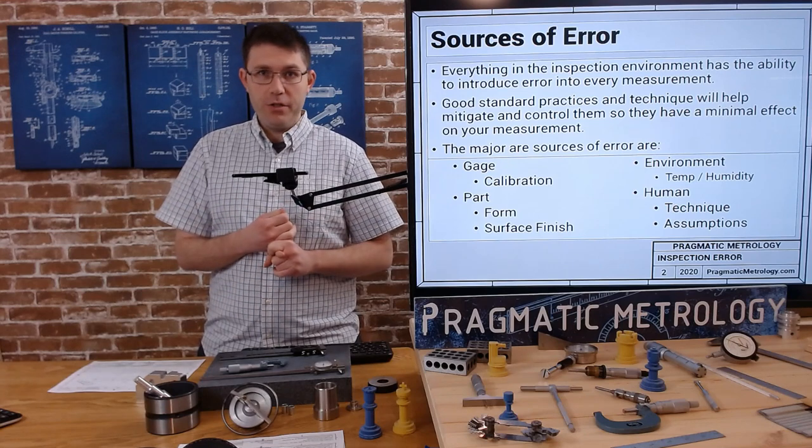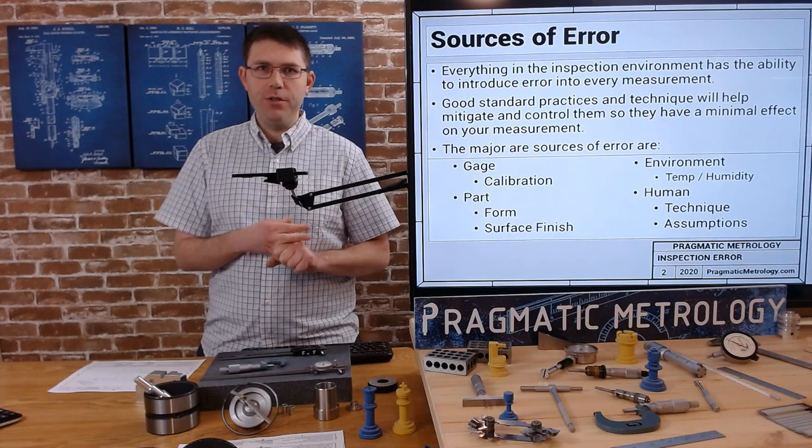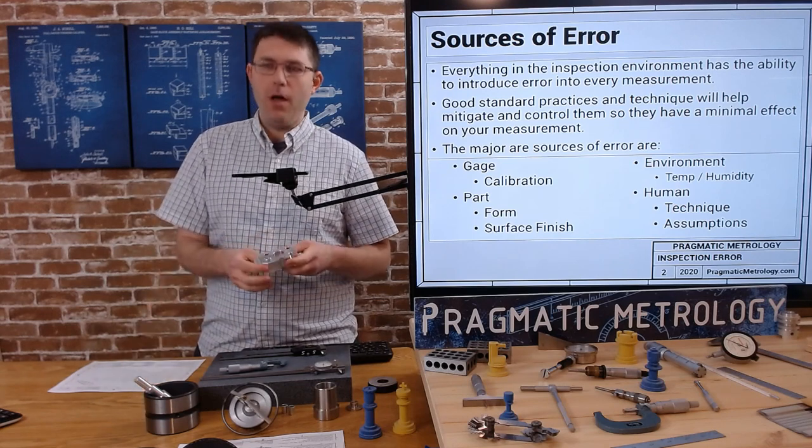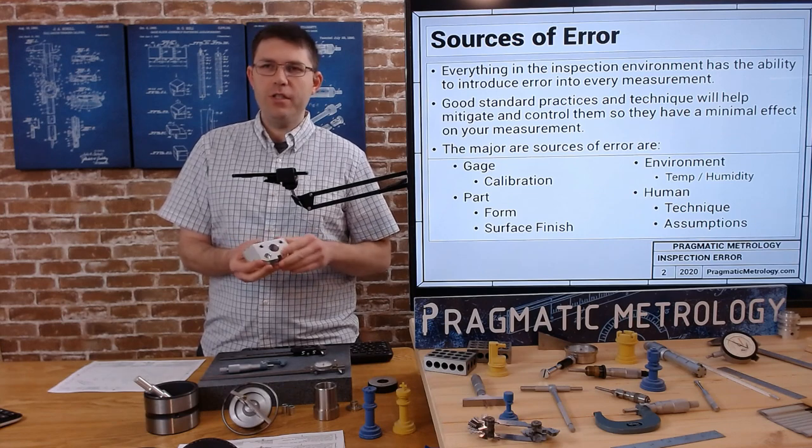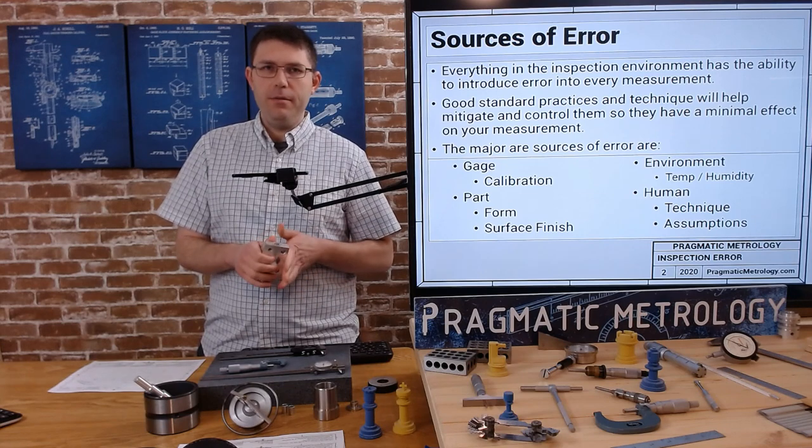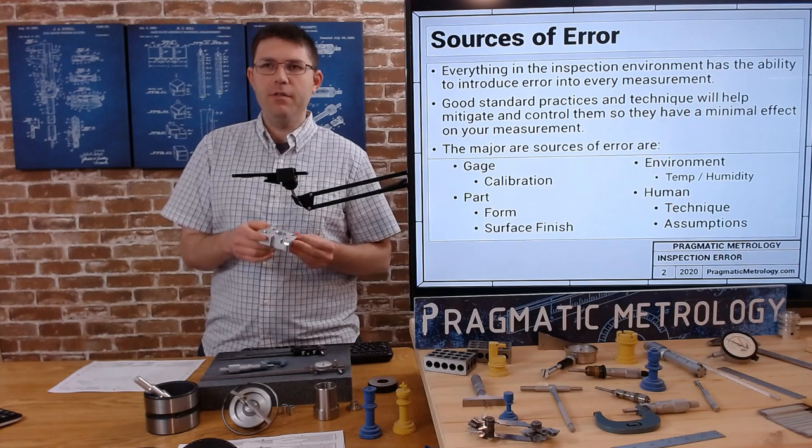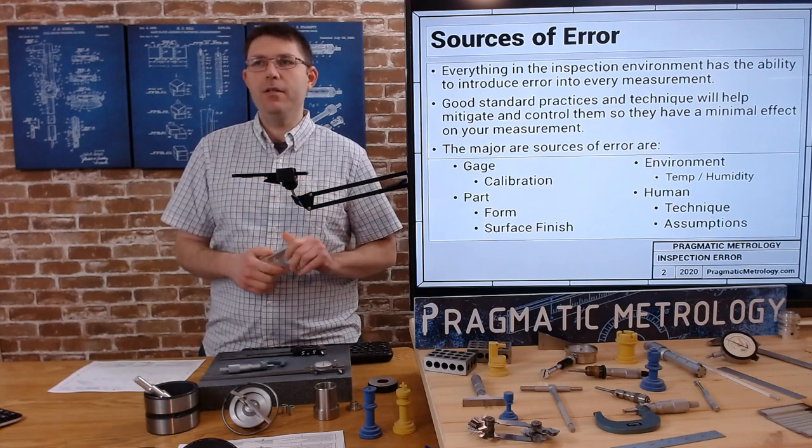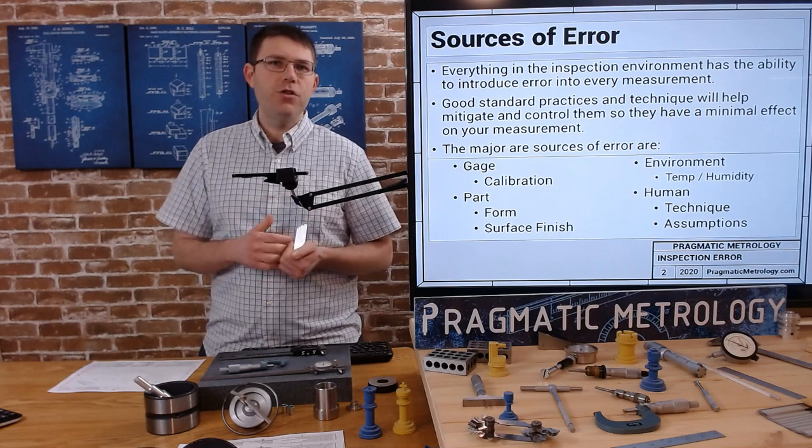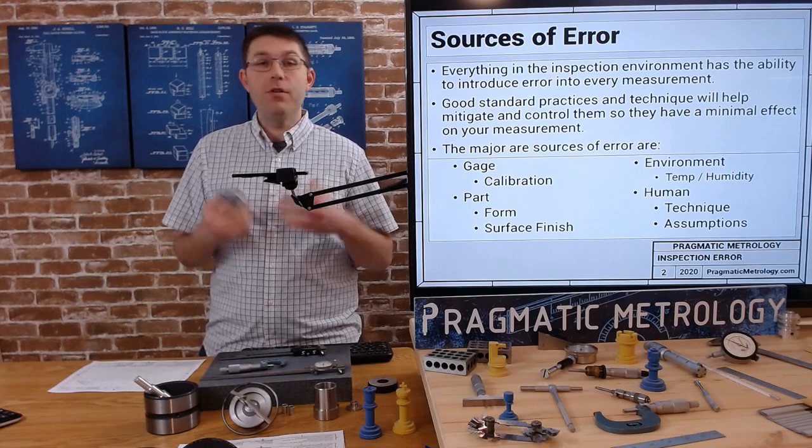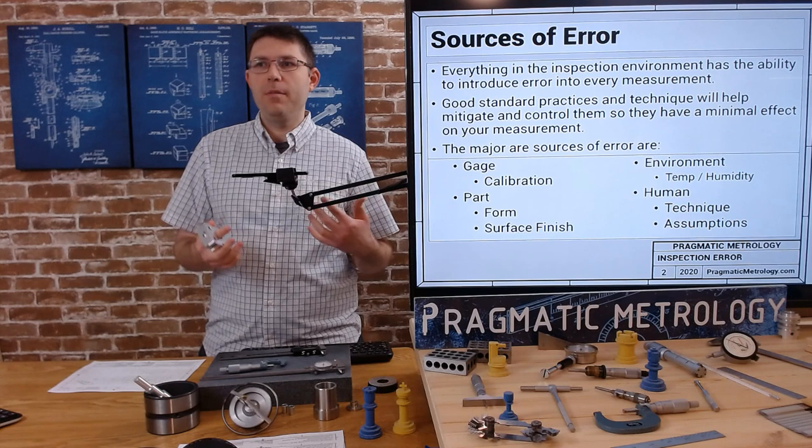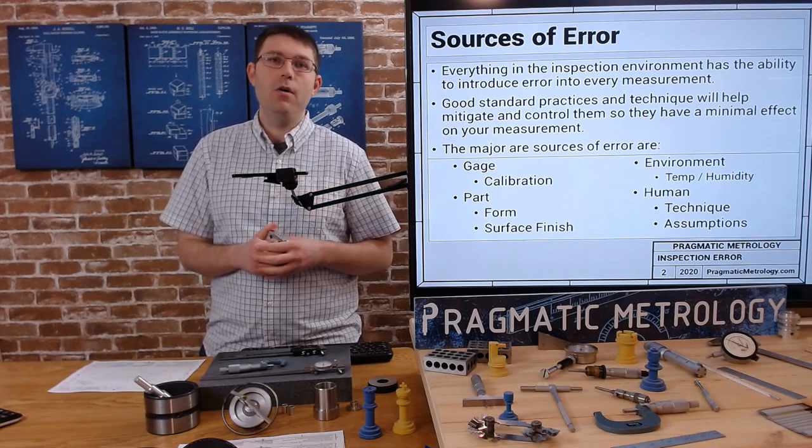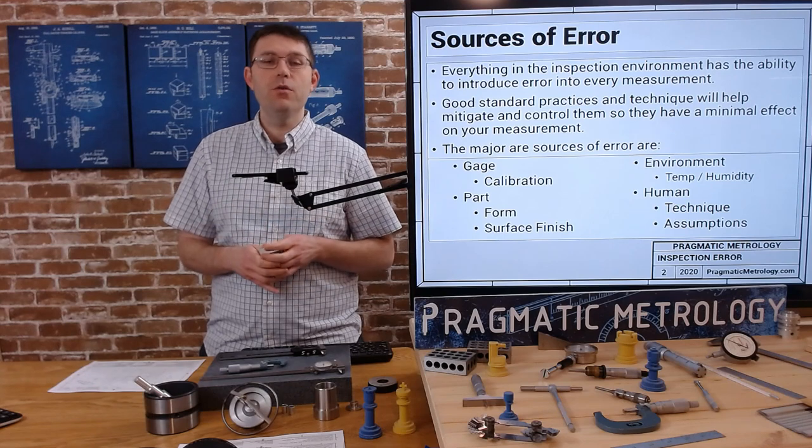When we talk about the major sources of error: gauge calibration is a big one, gauge condition, part form error. I've talked about form error a lot - circularity, cylindricity, flatness, straightness. Those types of errors are inherent in the part that you're inspecting. You have the environment - temperature and humidity - and then you have your technique as a human, as an inspector or a machinist, and then the assumptions you're making. Assumptions are sometimes a source of error.